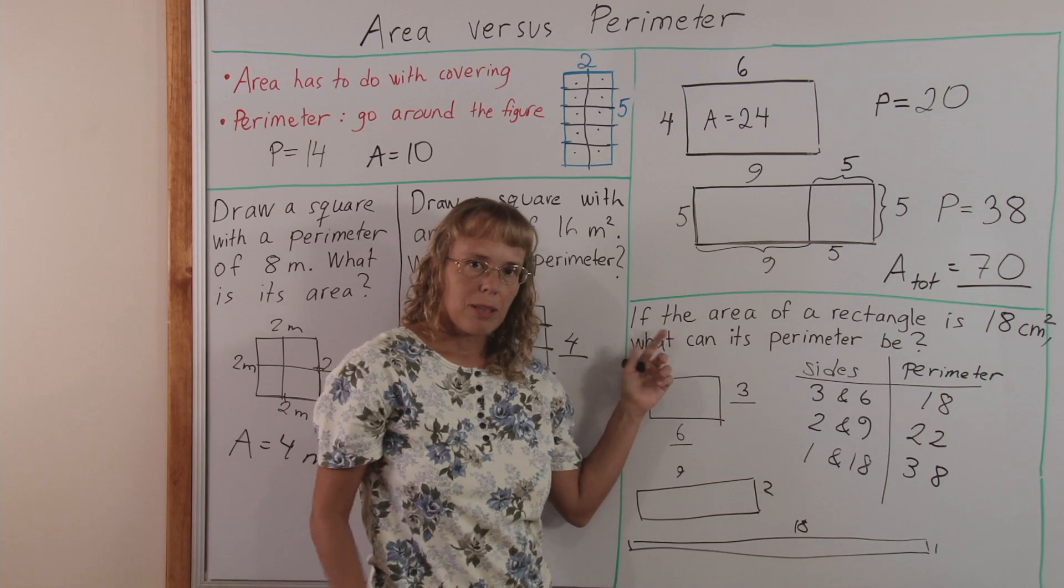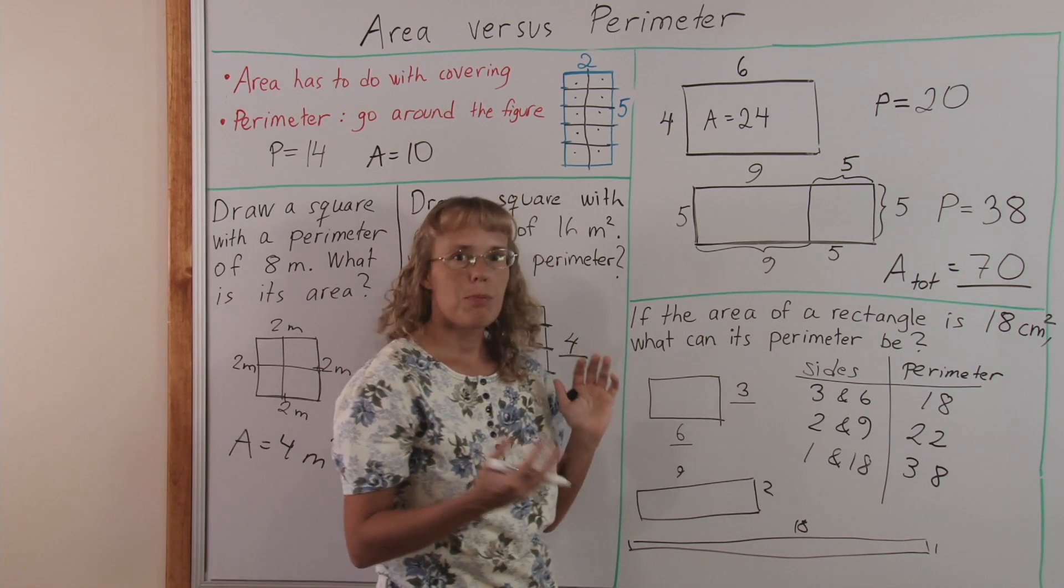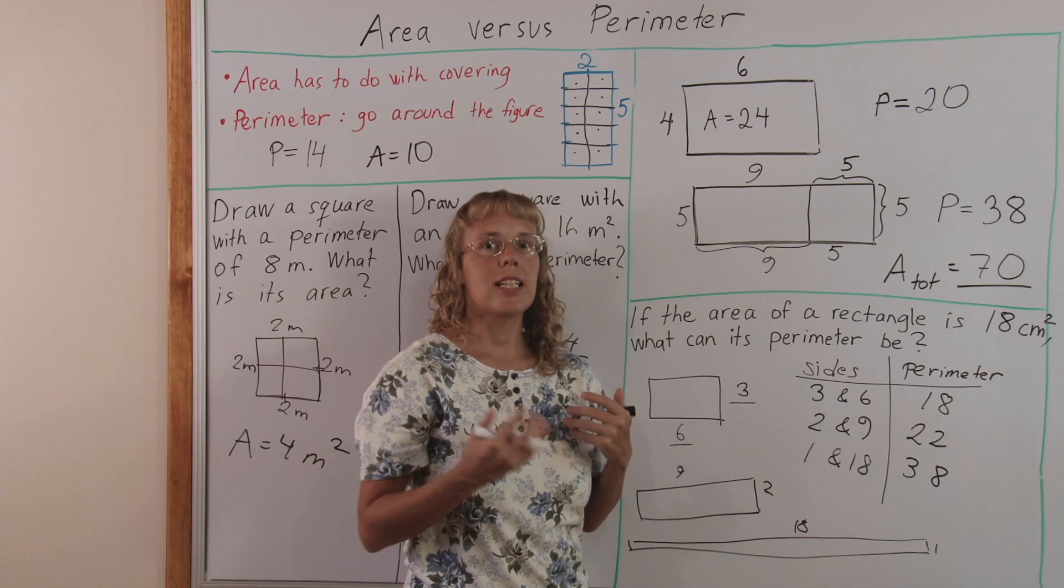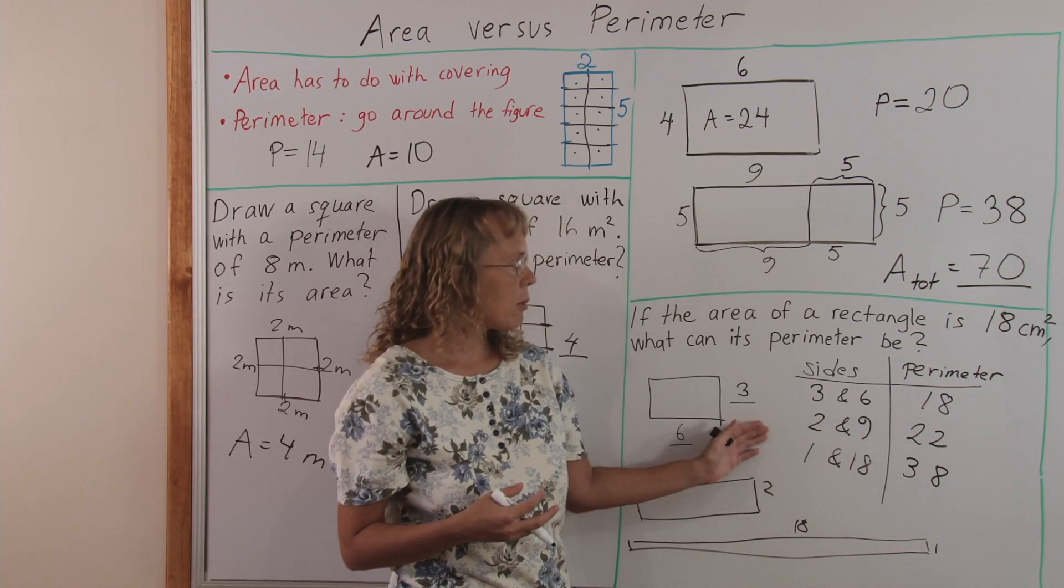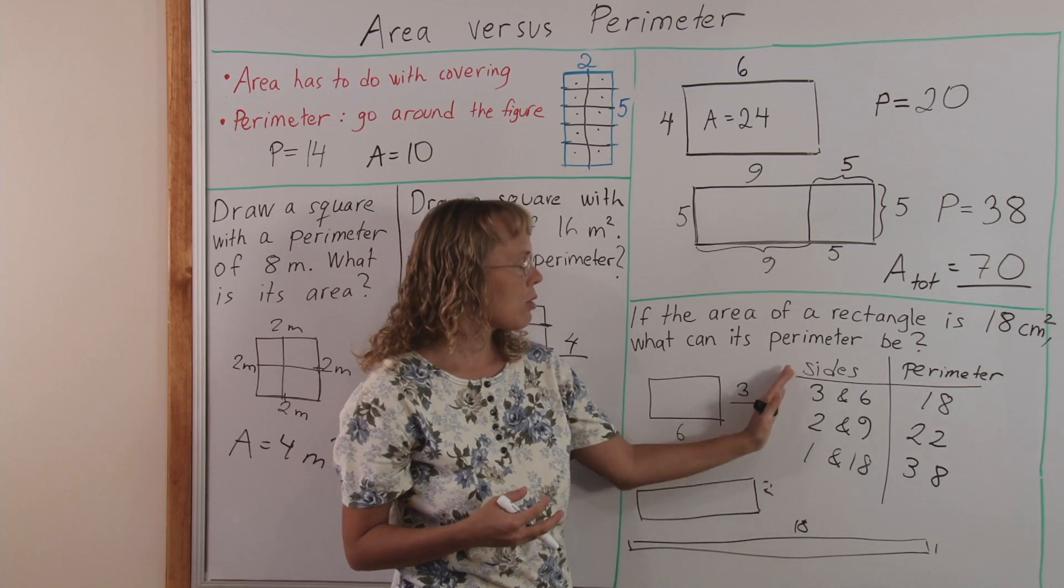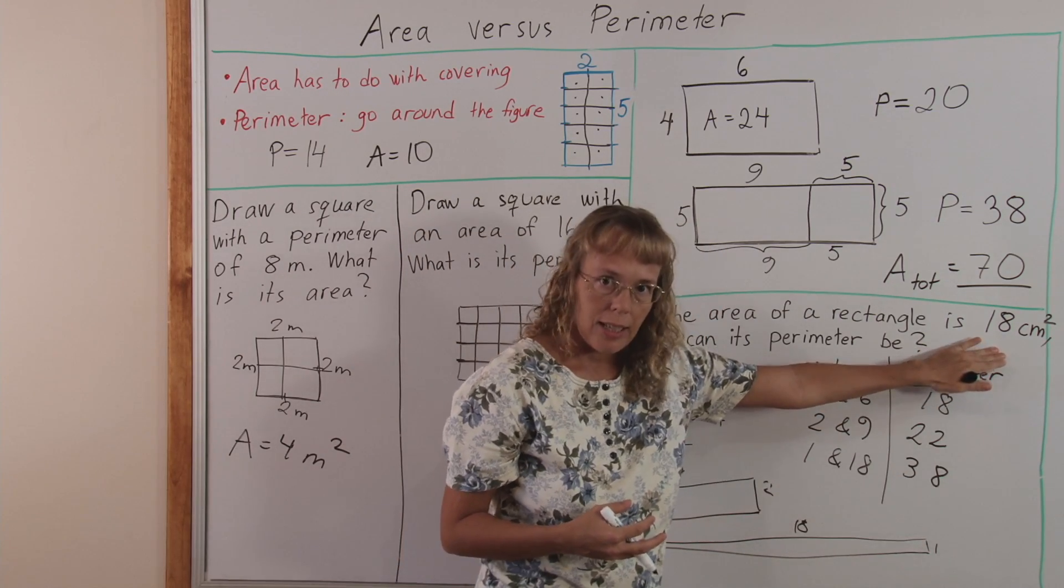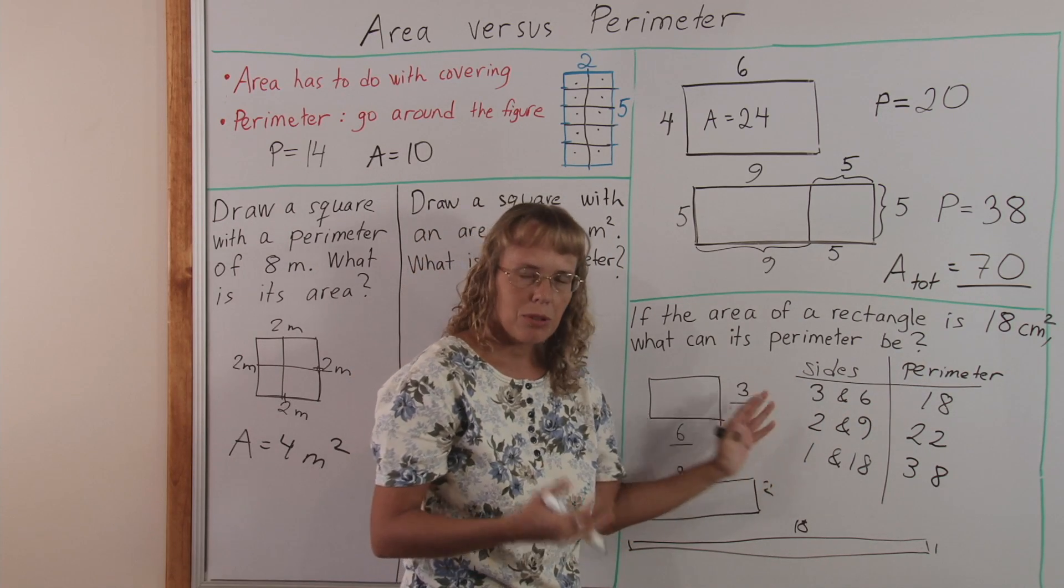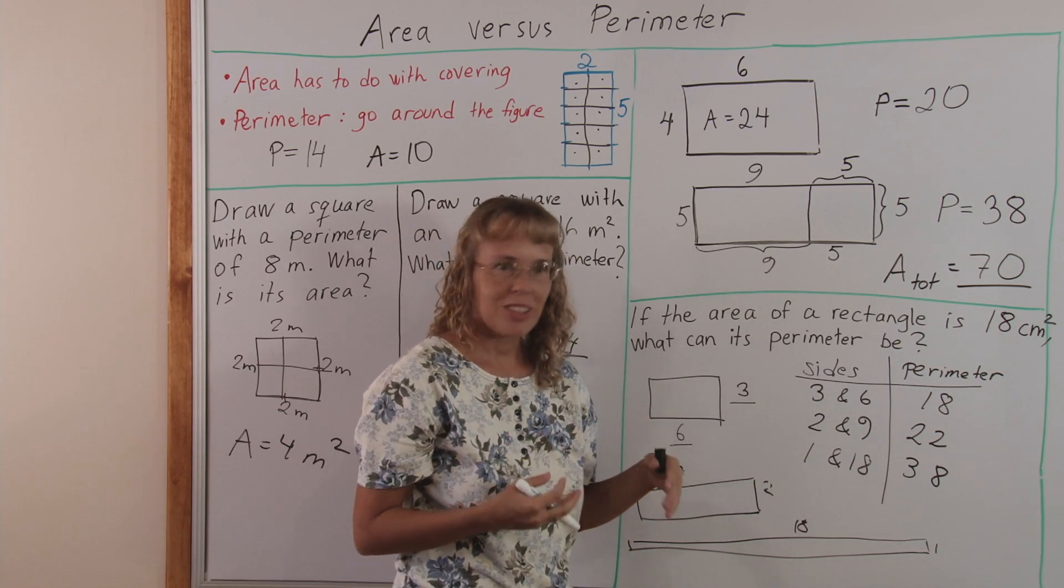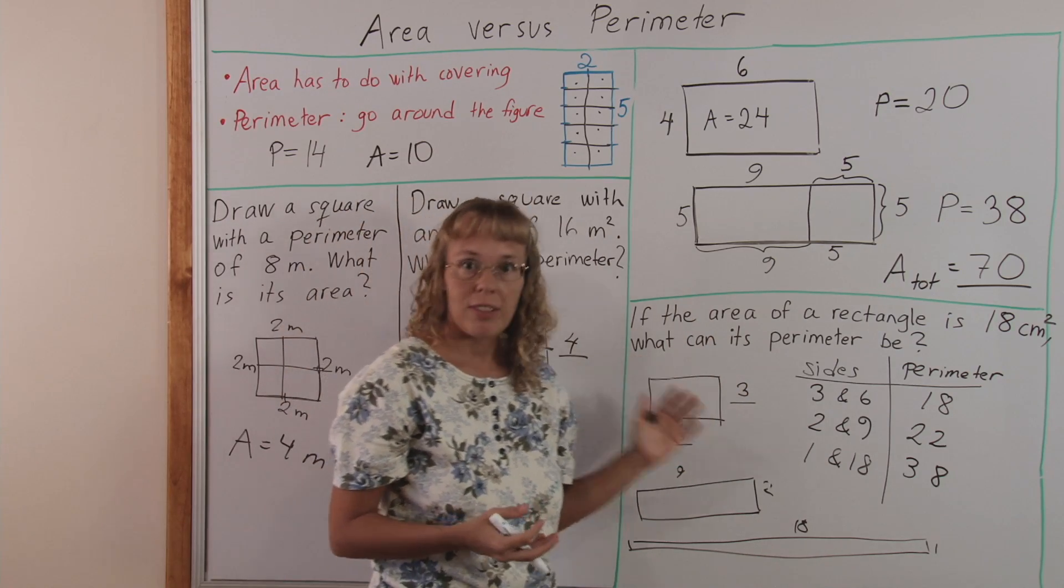This same problem can be asked just vice versa, where you are given the perimeter, like if the perimeter of a rectangle is eighteen, what can its area be? In a similar way, it is a very good exercise for students to think about how it can vary, how the perimeter can vary when the area is the same and there's many different possibilities. It even leads up to algebraic thinking about functions, yet these problems are good for fourth and fifth graders.